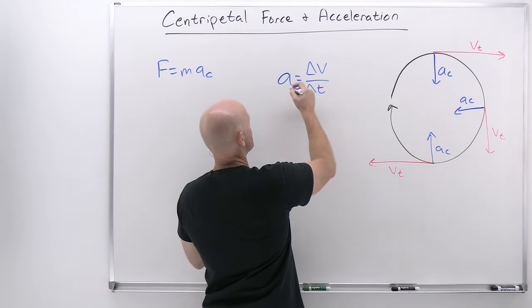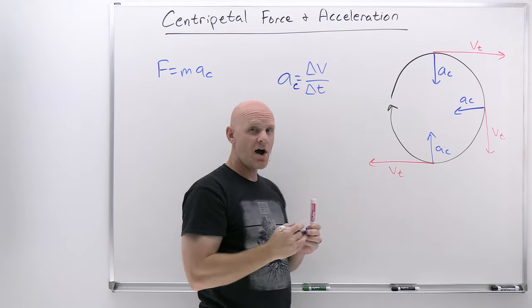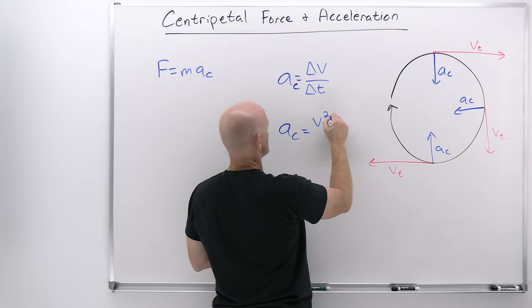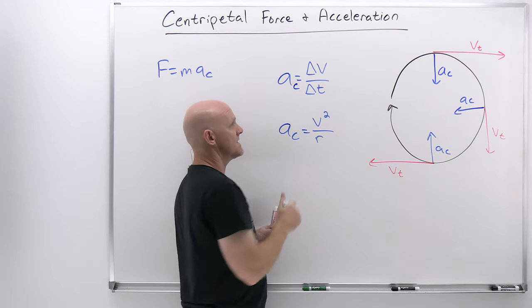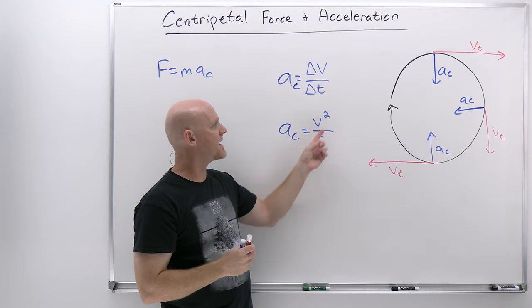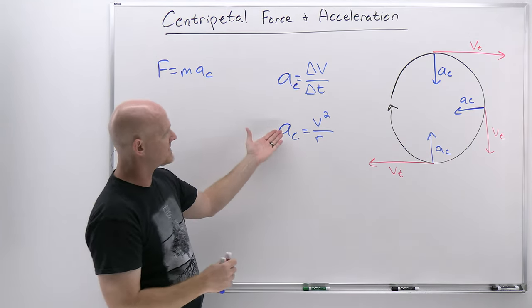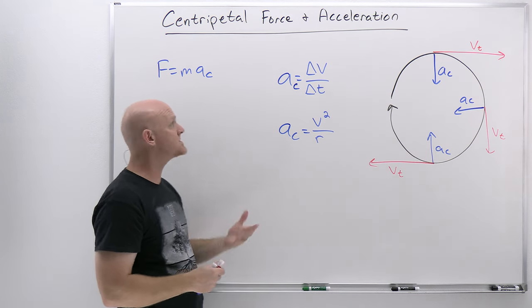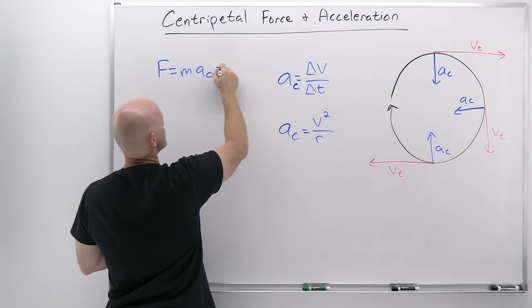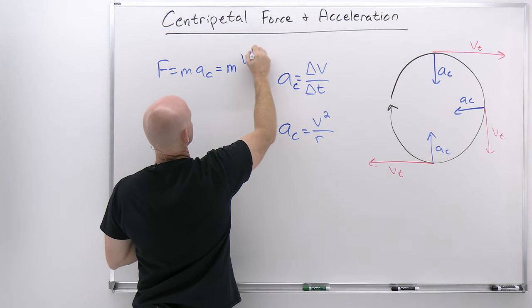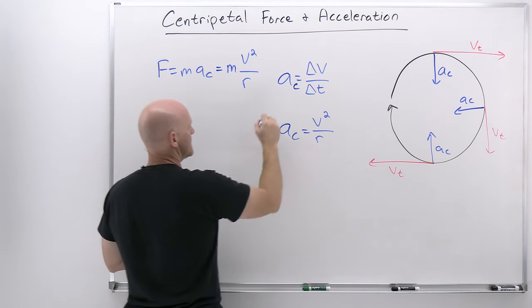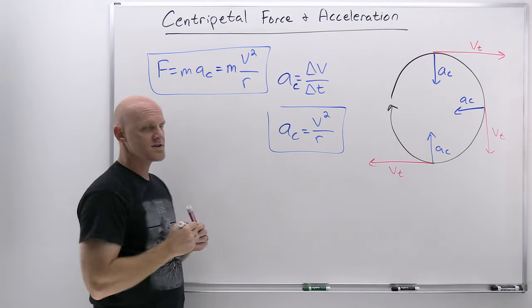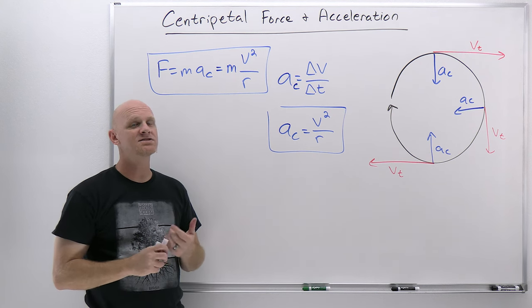We label this a_c and it is not equal to zero. Its magnitude is equal to v² over r — the tangential velocity squared divided by the radius. And if that's the expression for the centripetal acceleration, then the centripetal force, substituting that in, is going to equal m times v² over r. These are the key equations for centripetal acceleration and centripetal force.